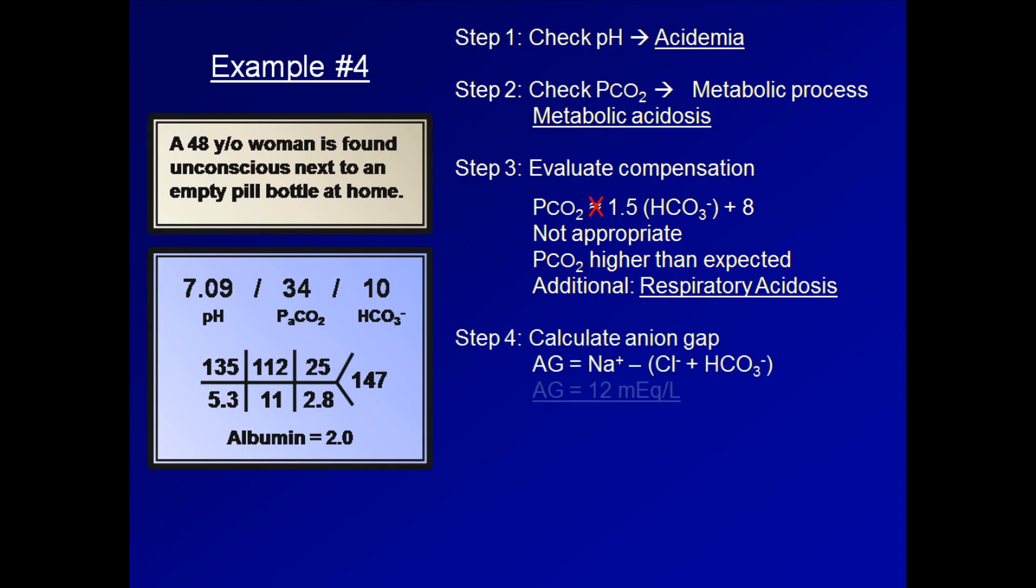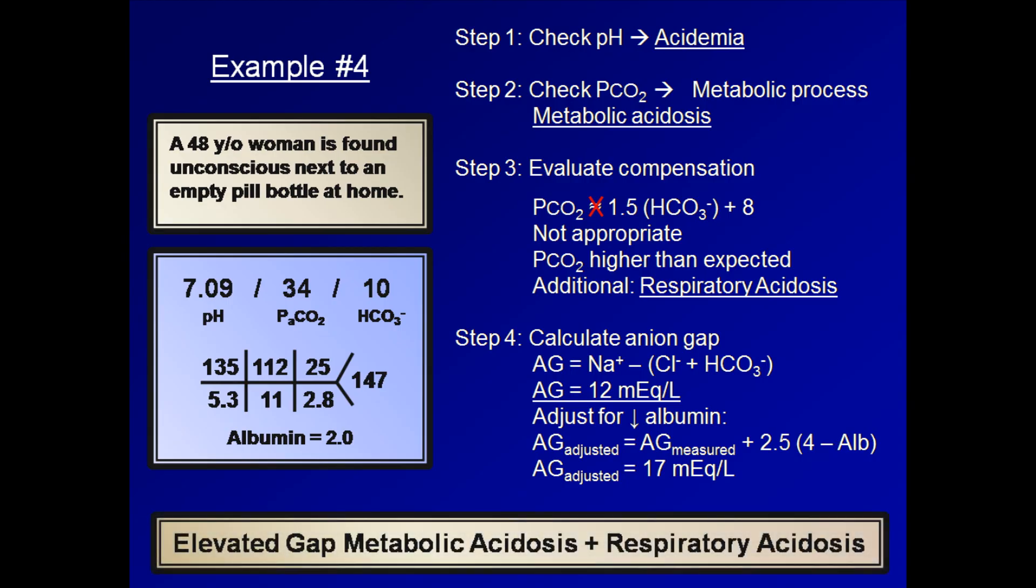The anion gap in this case is 12 milliequivalents per liter, which at first looks normal. But let's not forget that now we are given an albumin and that's not normal. Normal albumin is approximately 4 grams per deciliter, so we must adjust the anion gap for the hypoalbuminemia. The anion gap adjusted equals the anion gap measured plus 2.5 times the difference between 4 and the measured albumin. For this patient, this will be 12 plus 2.5 times 4 minus 2. Therefore, the adjusted anion gap is 17 and our final diagnosis is an elevated gap metabolic acidosis and a separate primary respiratory acidosis.